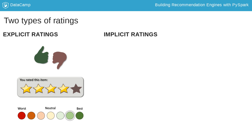Implicit ratings are a little bit different. They are based on the passive tracking of your behavior, like the number of movies you've seen in different genres. Fundamentally, implicit ratings are generated from the frequency of your actions.